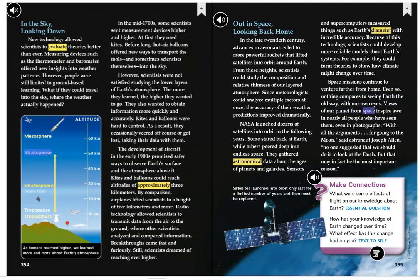Views of our planet from space inspire awe in nearly all people who have seen them, even in photographs. With all the arguments for going to the moon, said astronaut Joseph Allen, no one suggested that we should do it to look at the Earth. But that may, in fact, be the most important reason.